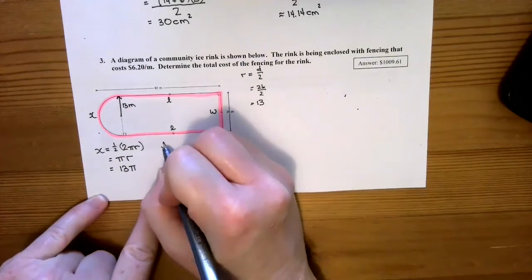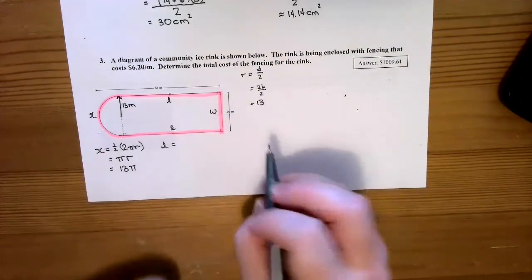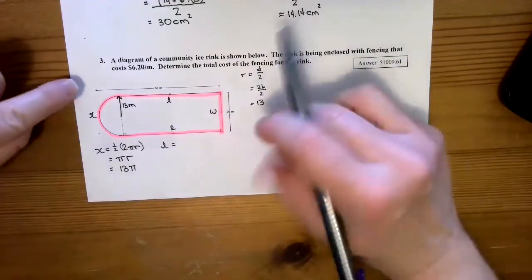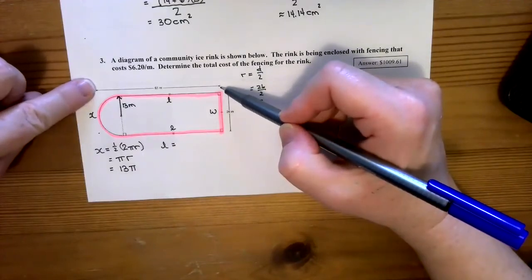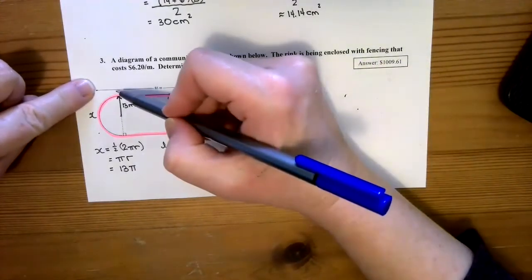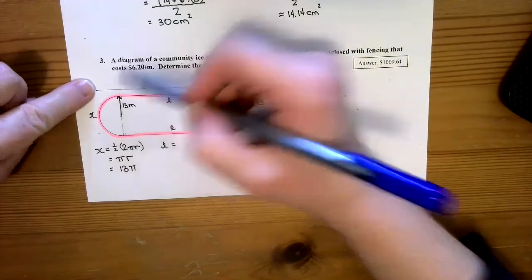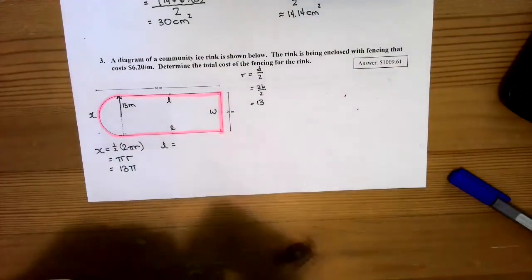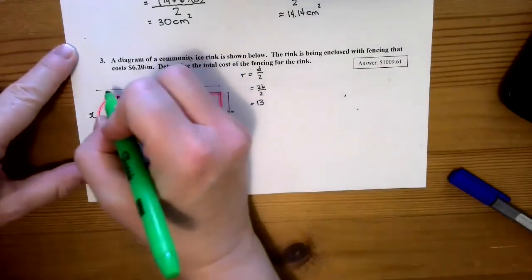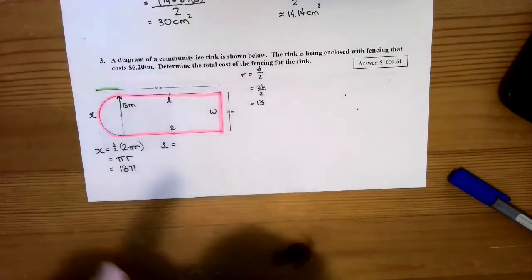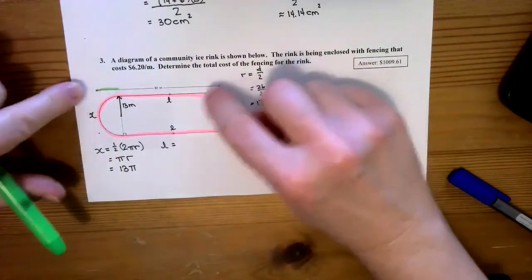Let's figure out what L is. L is going to equal the distance from here to here, subtract the distance from here to here. If I highlight that for you, we're going to have to take this part and subtract it from the whole thing. How can we figure out that part?